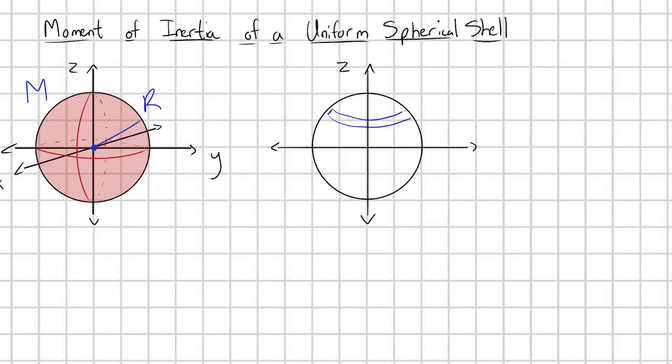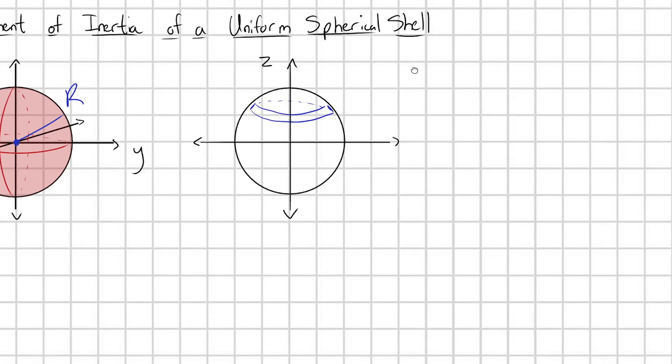All stacked on top of each other. We just stack a bunch of rings on top of each other in order to build this spherical shell. And let me remind us what the equation of a moment of inertia for a ring is. I of a ring is going to be equal to simply the mass of the ring times its radius squared.